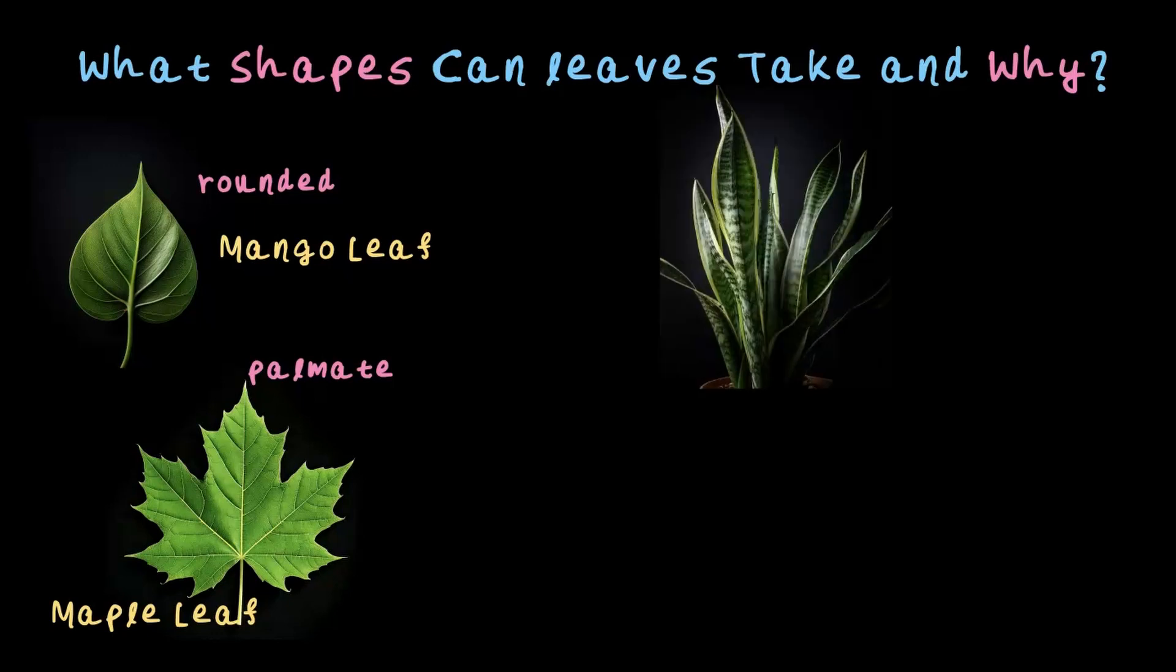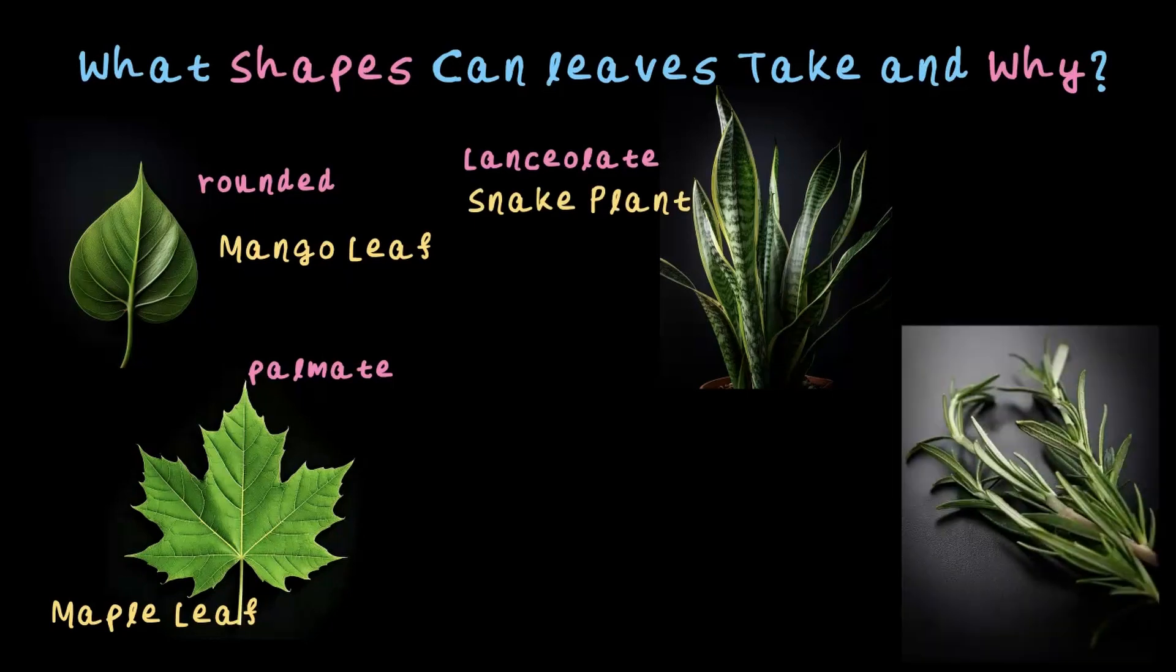Then you have the next type that is lanceolate shape. These leaves are long and narrow and these are seen in snake plants. We also have one more type that is called the linear type which are even thinner and straighter. You will see this in plants like rosemary and lavender.